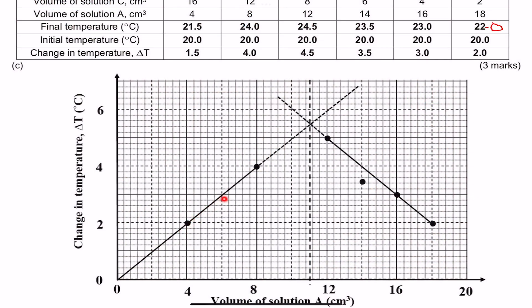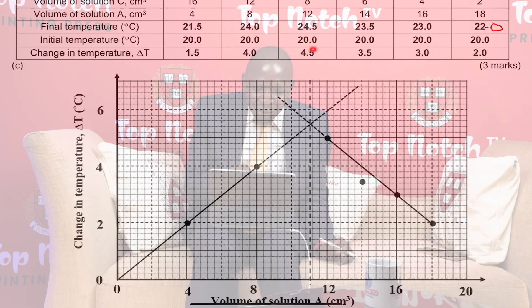Each line must pass through two correct plots, and the other line must also pass through two correct plots, then they are extrapolated to meet at a temperature higher than the highest change in temperature, which is 4.5. As you can see, they are meeting at around 5.2 or 5.25 — that is the change in temperature shown from the intersection point.